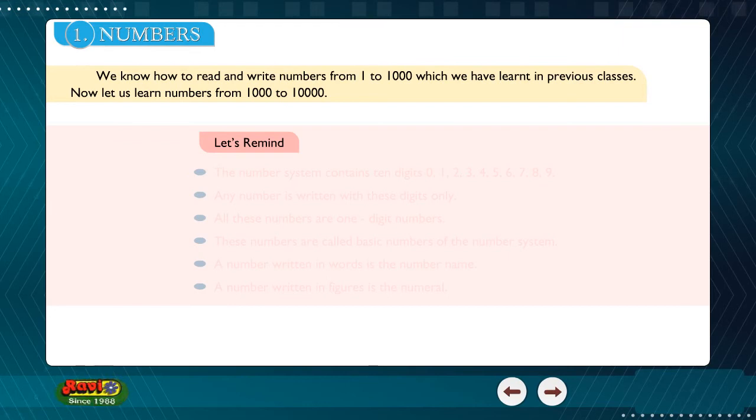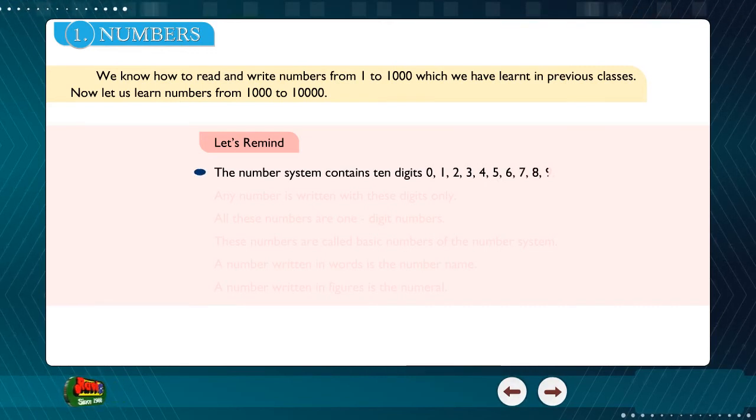Let's remind. The number system contains 10 digits: 0, 1, 2, 3, 4, 5, 6, 7, 8, 9.